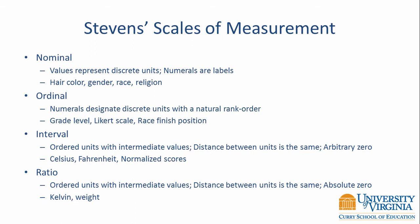Next is ordinal data. Here, numerals designate discrete units with a natural rank order. Examples include grade level and a Likert scale, which is a type of question where someone is asked to reply as strongly agree, agree, disagree, or strongly disagree.